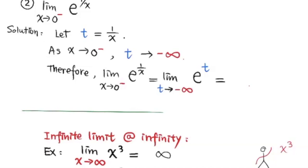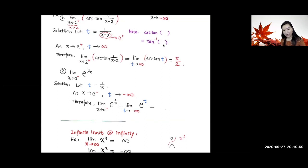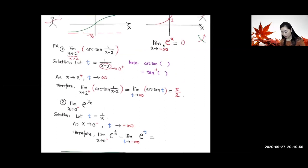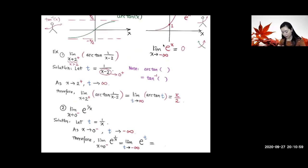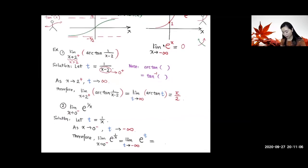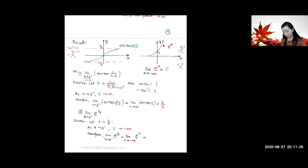It's very important to remember the graphs of basic functions. Looking at the graph of e to the t: when the exponent t goes to negative infinity, e to the t gets closer and closer to zero. So e to the t goes to zero. Therefore the limit of e^(1/x) as x → 0⁻ equals zero.